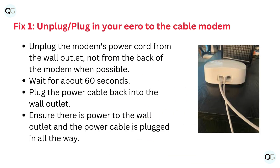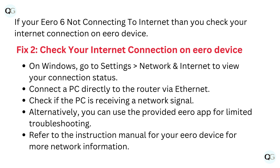Fix 1: Unplug your Eero from the cable modem. Unplug the modem's power cord from the wall outlet, not from the back of the modem when possible. Wait for about 60 seconds. Plug the power cable back into the wall outlet. Ensure there is power to the wall outlet and the power cable is plugged in all the way. If your Eero 6 is not connecting to internet, then check your internet connection on the Eero device.